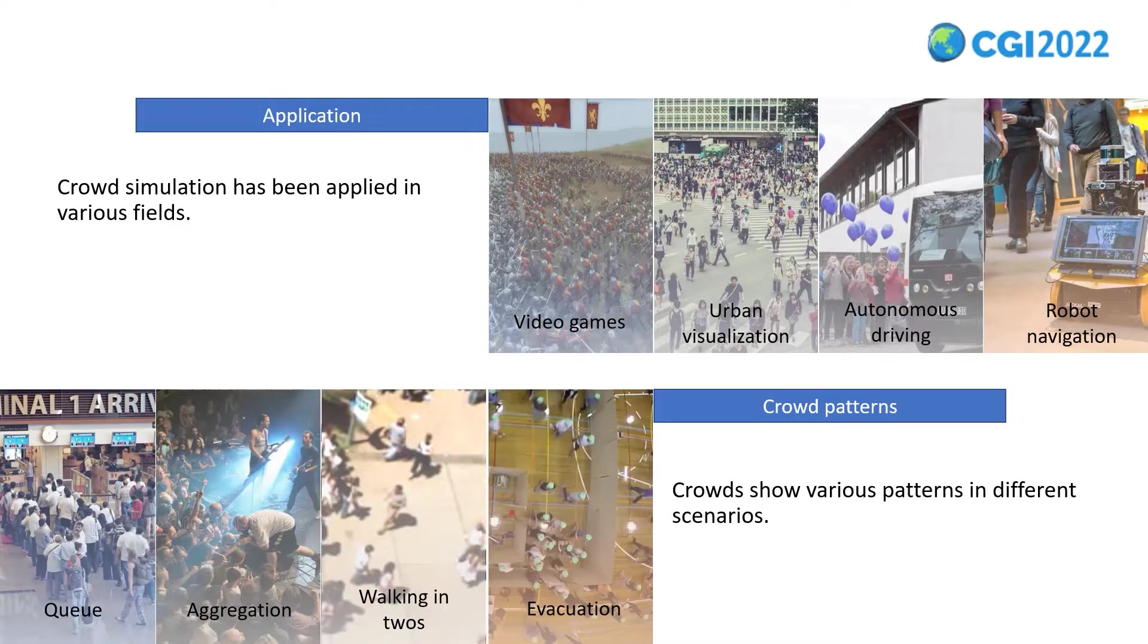A crowd simulator that generates realistic crowds with various movement patterns and environmental adaptability is urgently desired. It can be used in video games, urban visualization, autonomous driving, and robot navigation test. In different scenarios, crowds show various movement patterns, such as queue, aggregation, walking in twos, and evacuation.